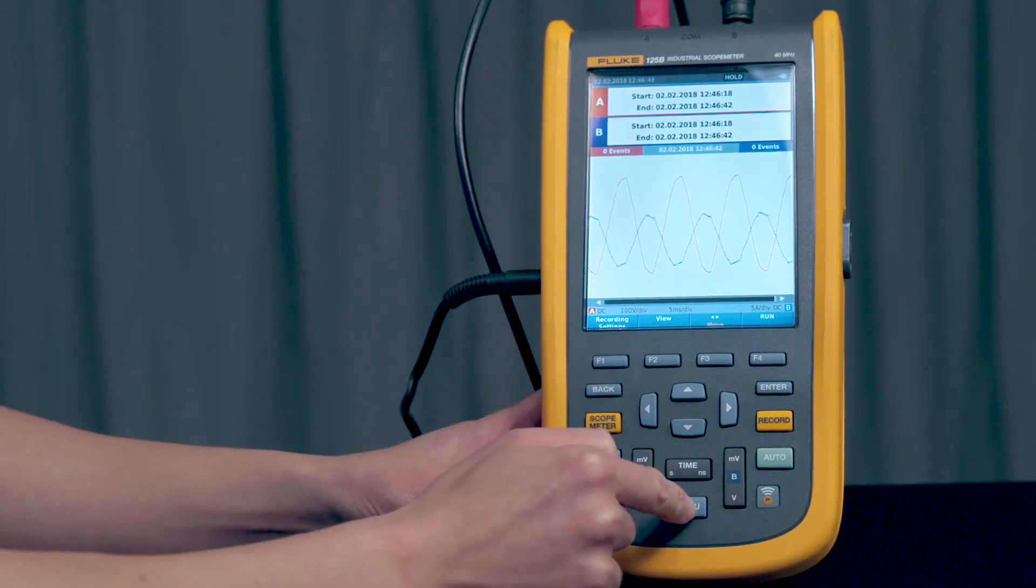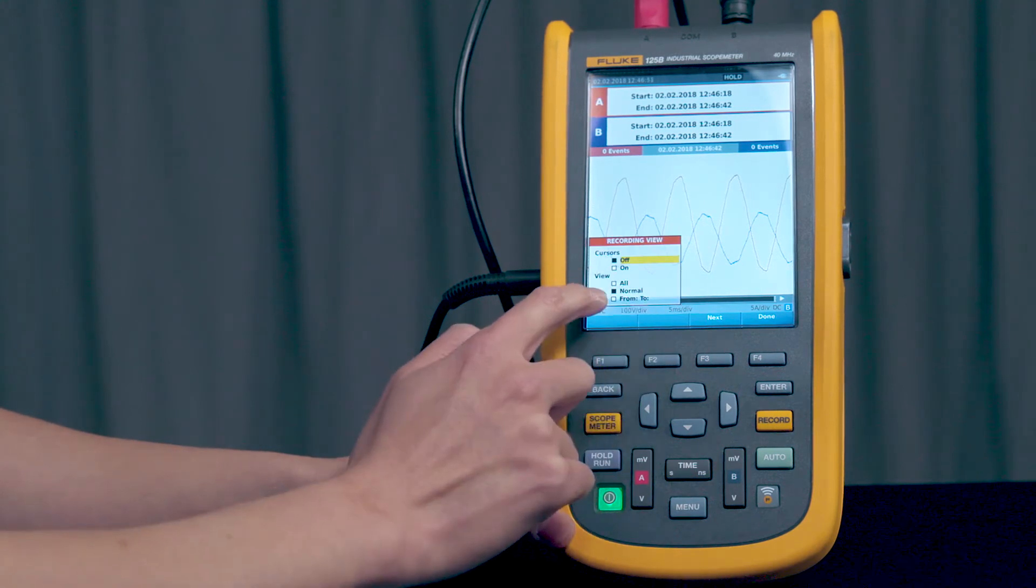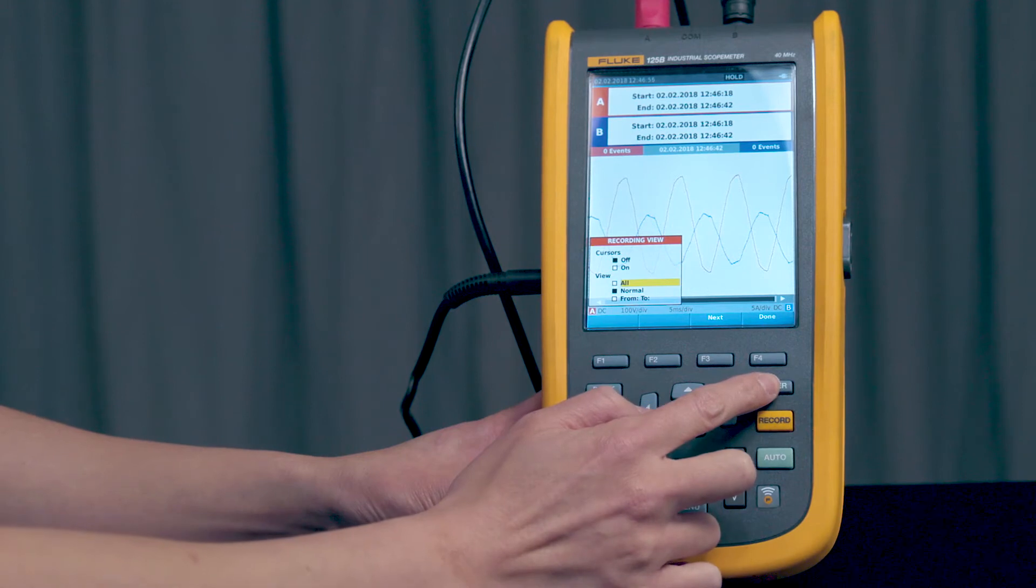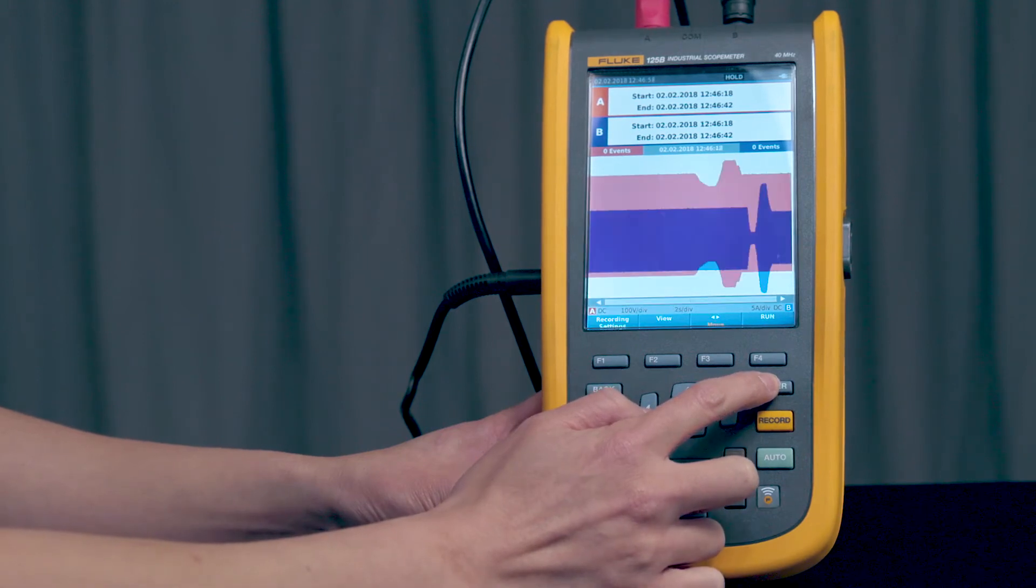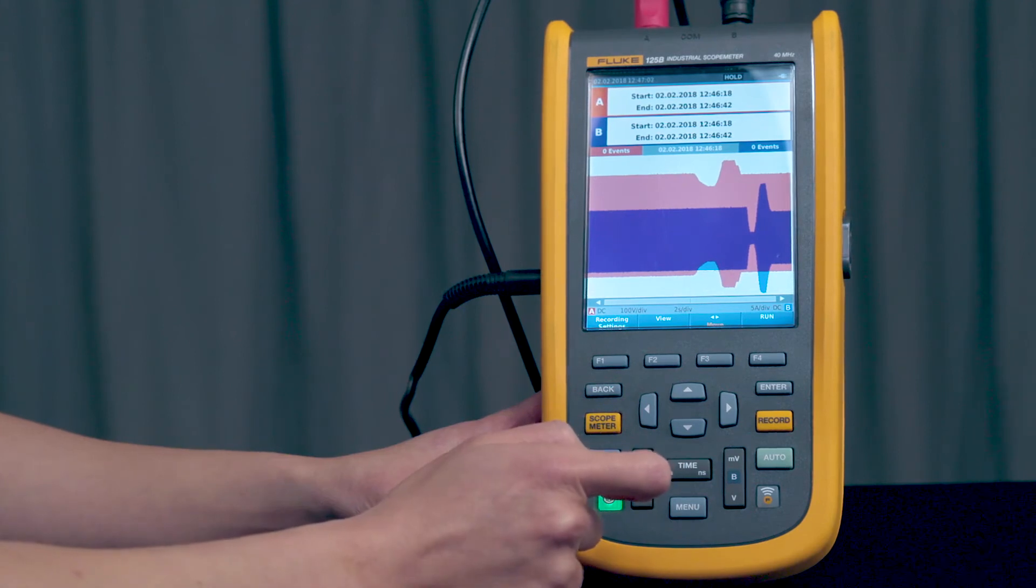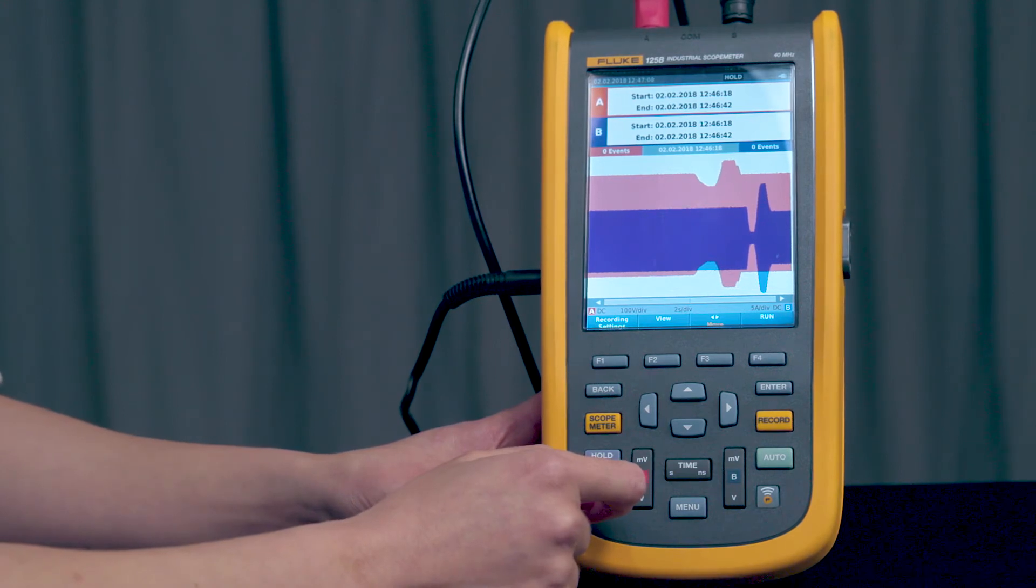And then we can go to View. And we can go to View All. And press Enter. And that is the voltage and current that was measured over time. Now you can correlate some of the voltage or current increases and decreases.